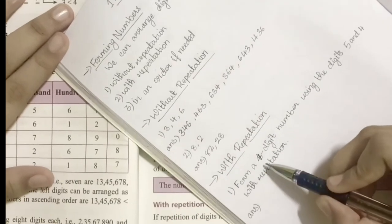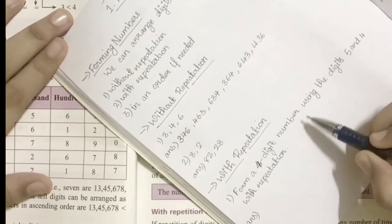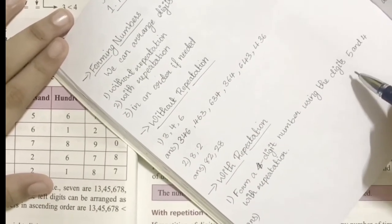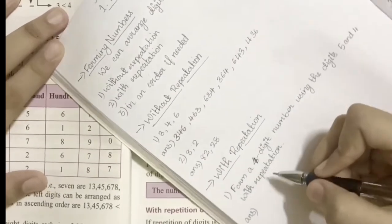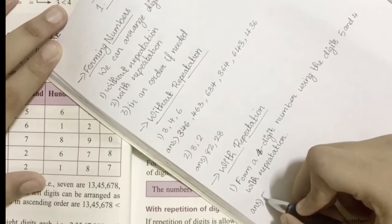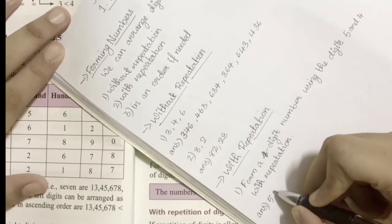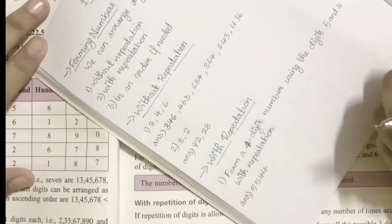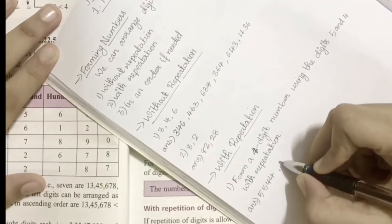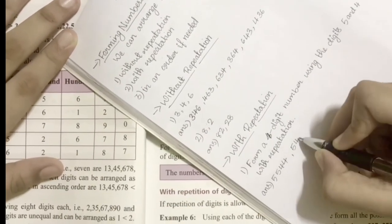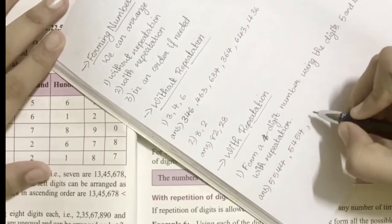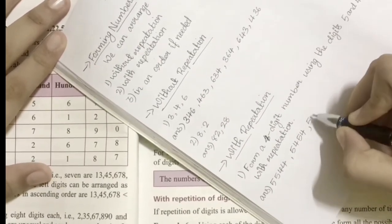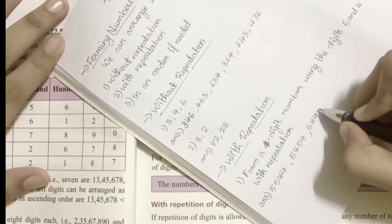Form a four-digit number using the digits 5 and 4 with repetition. So our first number will be 5554, then 5454, or 5445.